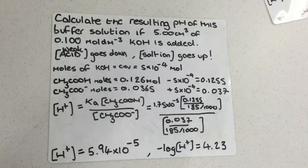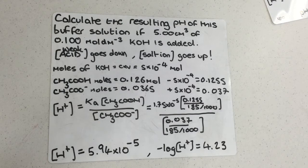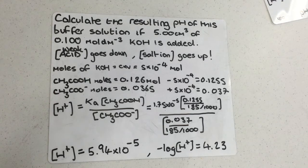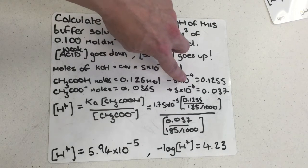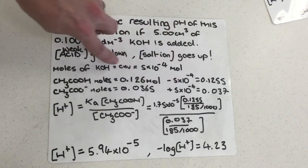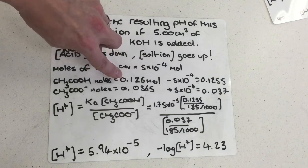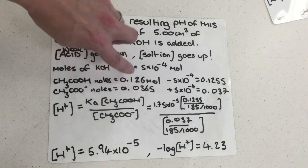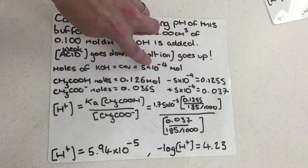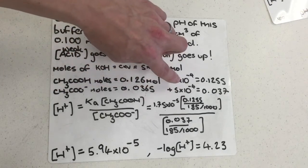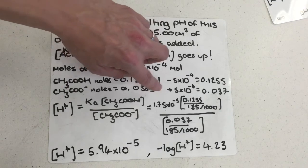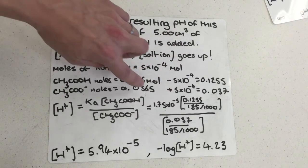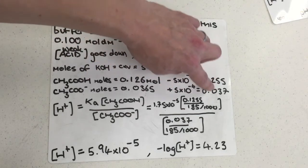I also have the number of moles of the salt ion from the previous part of the question: 0.0365. I then subtract a mole value equivalent to the moles of KOH added from the weak acid, and add the same mole value to the salt ion. This is because the weak acid decreases by the amount of KOH added — since it reacts with it — and the salt ion increases because more salt is made, specifically by the number of moles of KOH. I take these mole values and adjust them accordingly to give two new mole values.